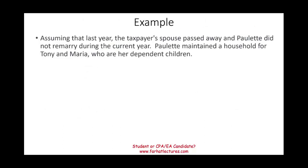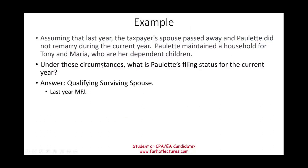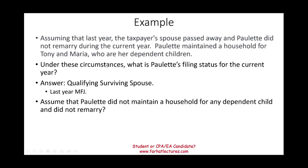For example, last year Paulette's spouse George passed away. In the current year, Paulette did not remarry and maintained a household for Tony and Maria, her dependent children. Her filing status is qualifying surviving spouse. If instead Paulette did not maintain a household for any dependent child and did not remarry, she would be single.